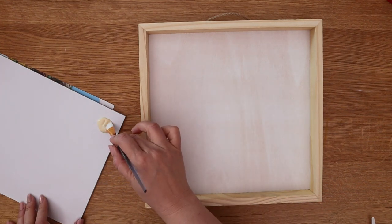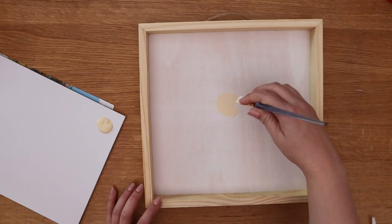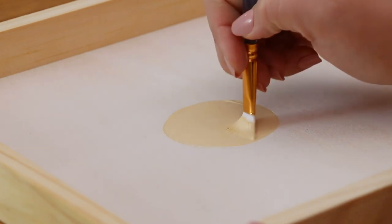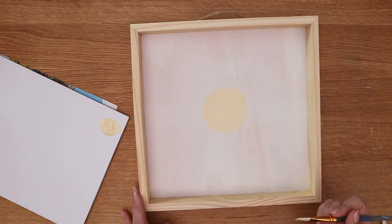I also have a medium flat brush and I'm going to use that to just freehand a freeform circle shape near the center of my wooden sign.